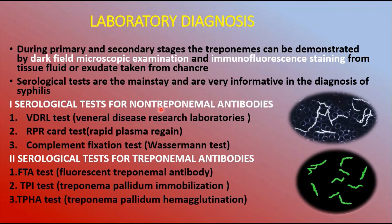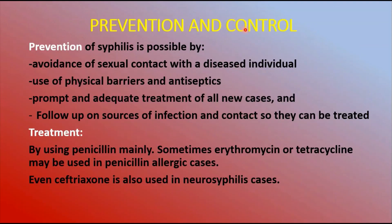Serological tests for treponemal antibodies include the Fluorescent Treponemal Antibody (FTA) test, the Treponema pallidum Immobilization (TPI) test, and the Treponema pallidum Hemagglutination (TPHA) test. These are the serological tests used to identify syphilis disease.